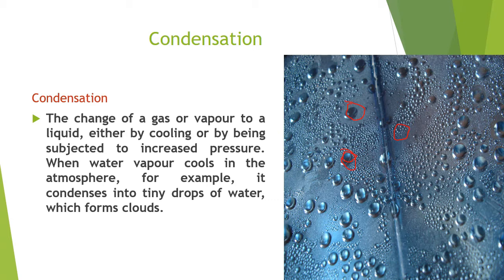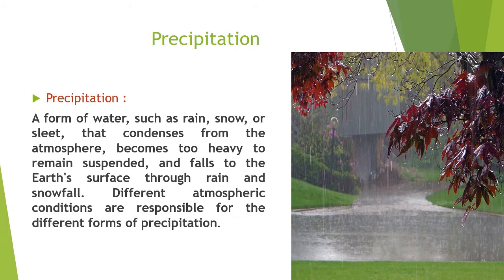These tiny drops that remain floating in the air appear to us as clouds. Precipitation is the form of water — such as rain, snow, or sleet — that condenses from the atmosphere, becomes too heavy to remain suspended, and falls to the earth's surface. Different atmospheric conditions are responsible for different forms of precipitation. When the clouds get heavy and can't carry any more water, the water droplets come back to earth. This process is called precipitation, and may come down as rain, snow, or hail.